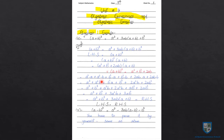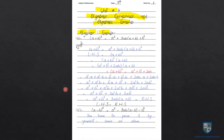In the next step, we arrange these terms according to their powers. First, the highest powers: a cube plus b cube. Then a square b plus 2a square b (the two a square b terms together). Then b square a, which can be written as ab square, plus 2ab square.